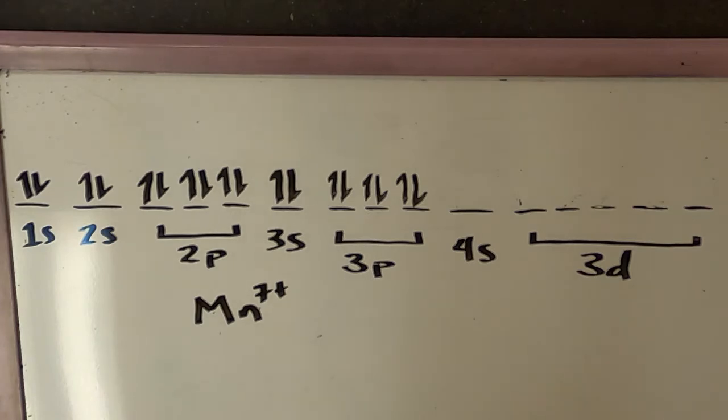And the form that manganese would take depends largely on what other elements it is paired with and how many electrons it would lose to those other elements. So what we're trying to figure out is which of those oxidation states is the one that manganese has when it reacts and pairs with chlorine.